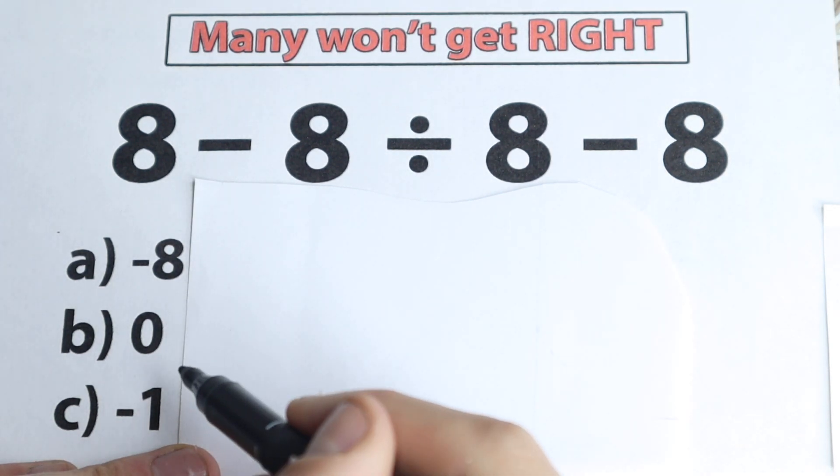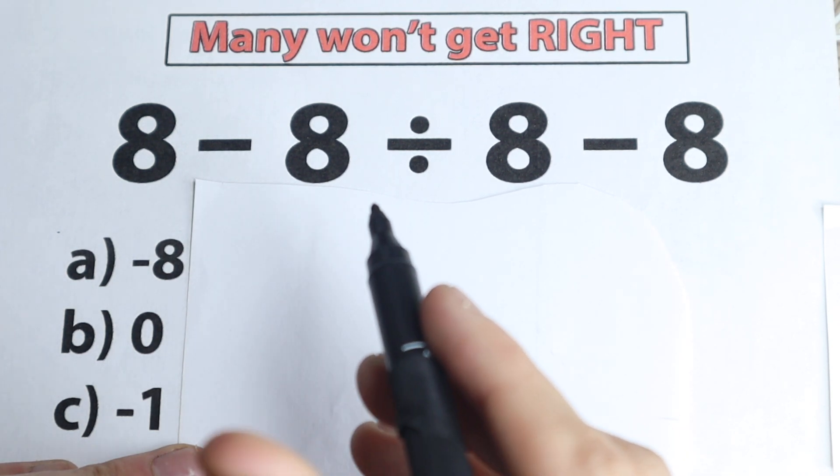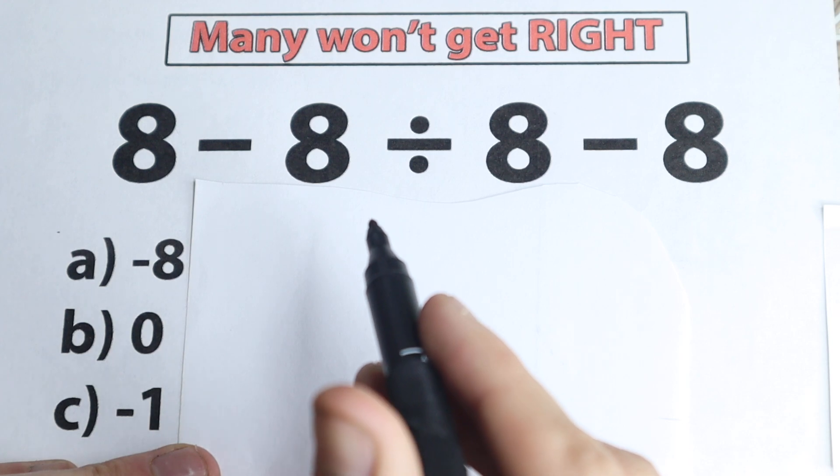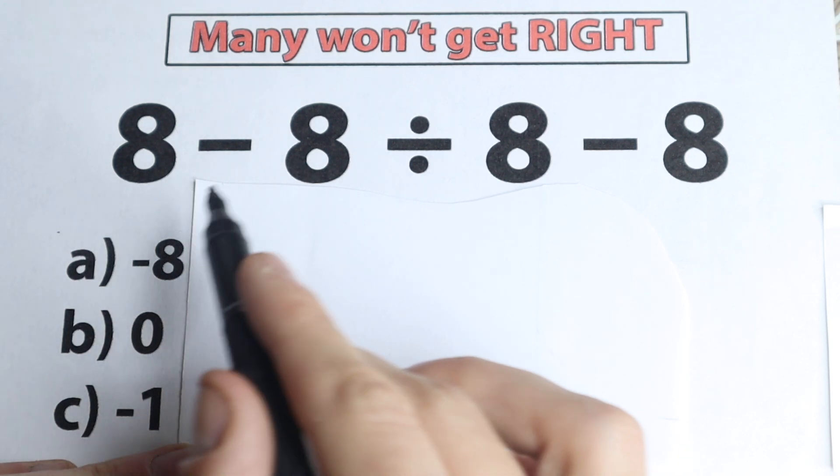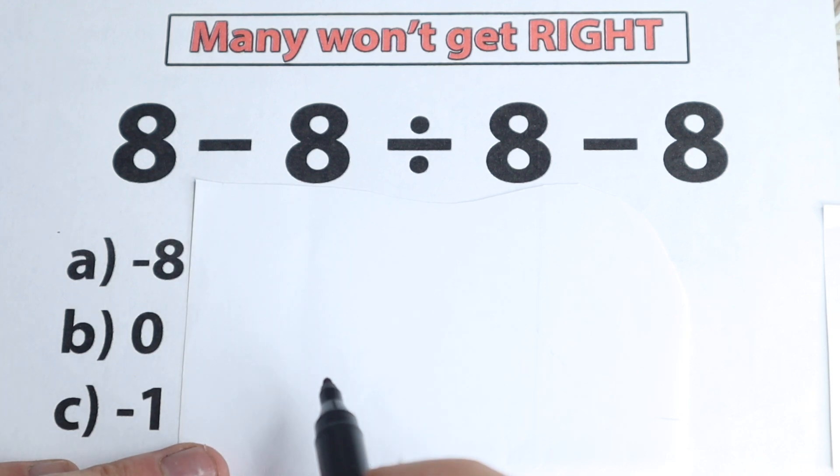Right here we have three options A, B and C. So right now I suggest you to pause the video, try to solve it by yourself. Let's use our supercomputer in our head, let's don't use our calculator right here. Here's our question, here's our answer, and choose one option, what do you think is a correct answer to this question.